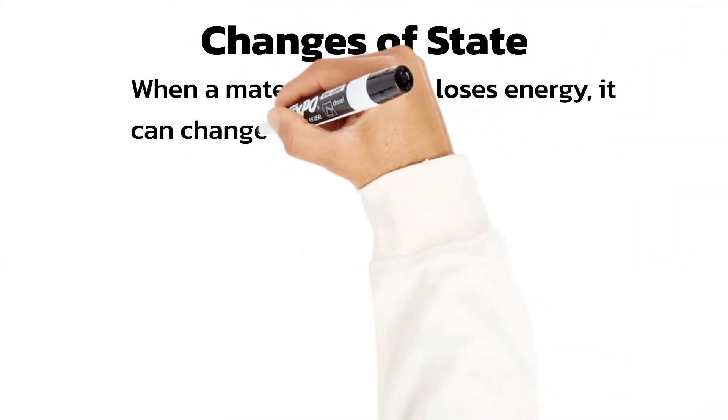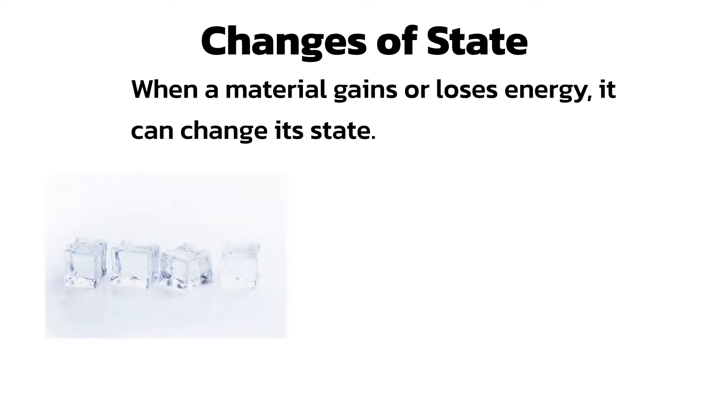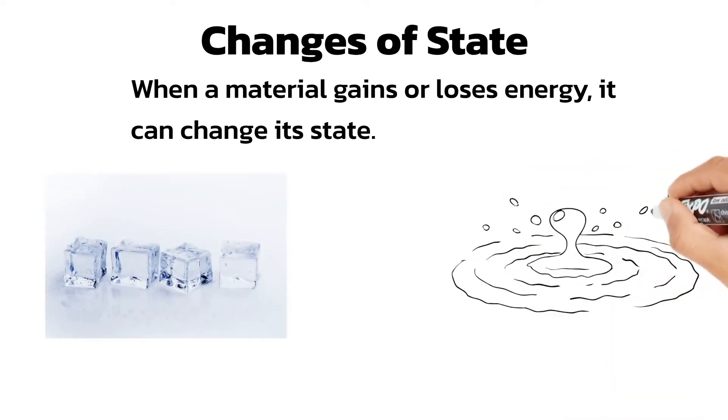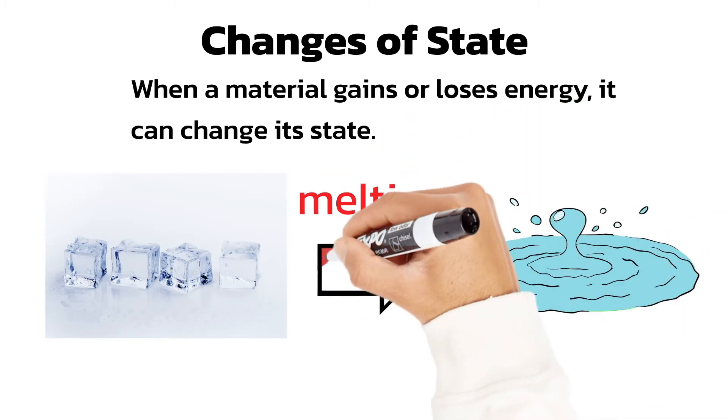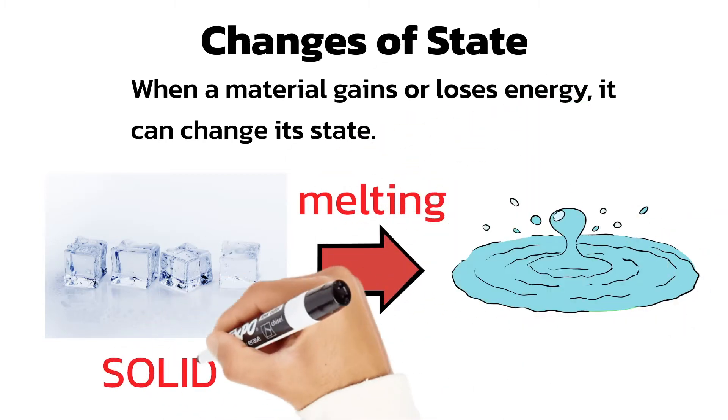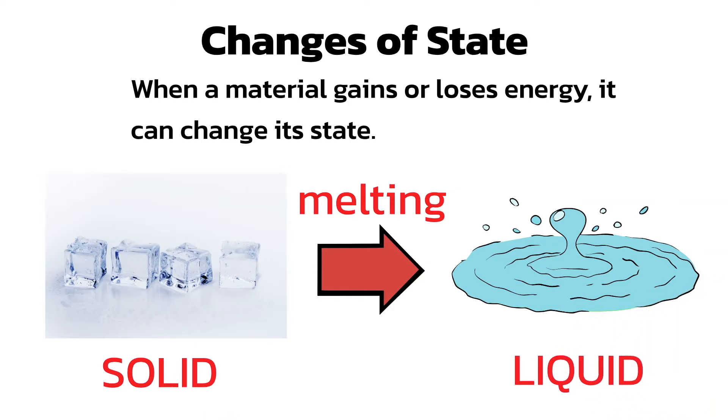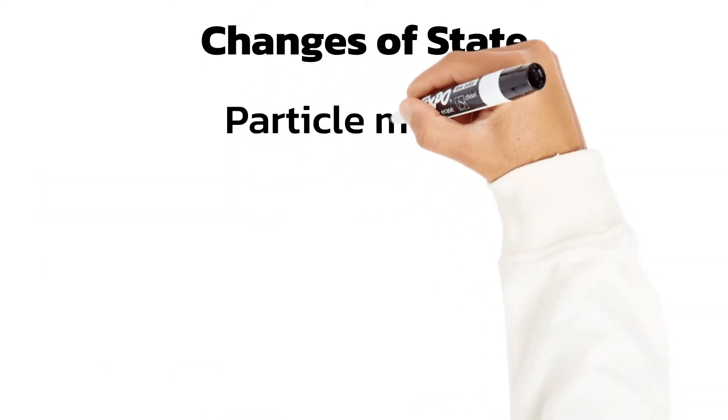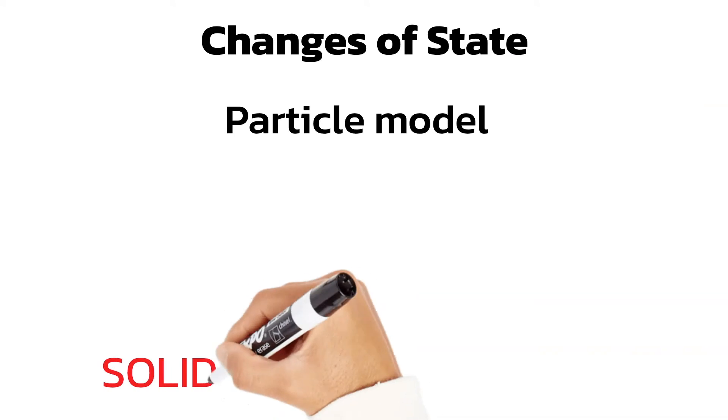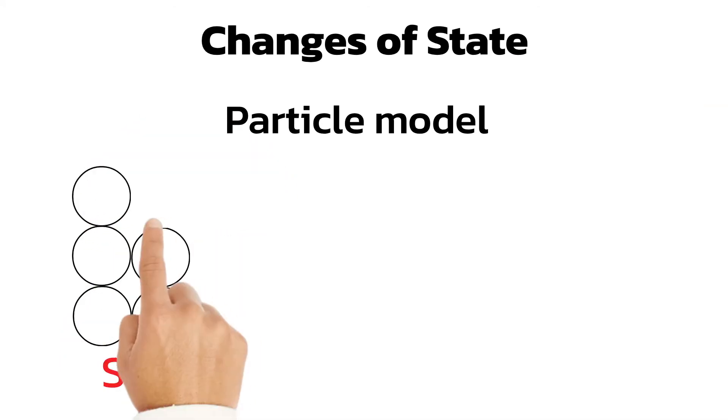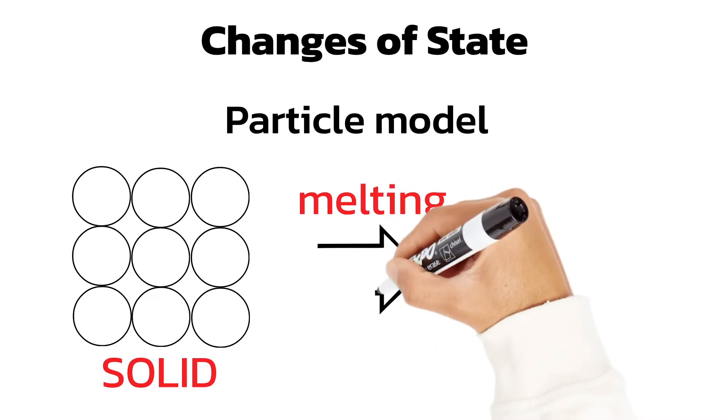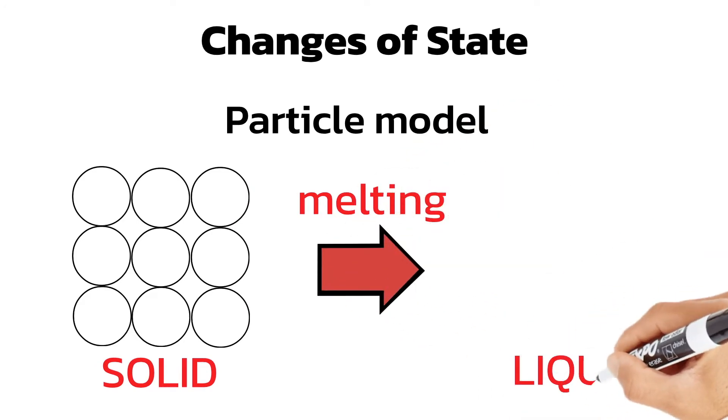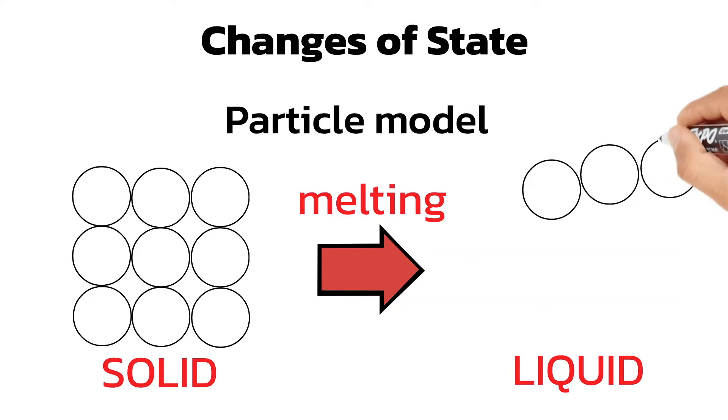When a material gains or loses energy, it can change its state. When ice is heated it can melt and turn into water. More generally, melting is the term given to a solid turning into a liquid. The temperature that this happens at is called its melting point. As a solid melts, its temperature will stay constant until it's completely melted. The particles in the solid gain energy and this causes their vibrations to increase. The bonds between the particles will weaken and they will be able to move past each other. Their arrangement goes from regular rows and columns in the solid to a random arrangement in the liquid.